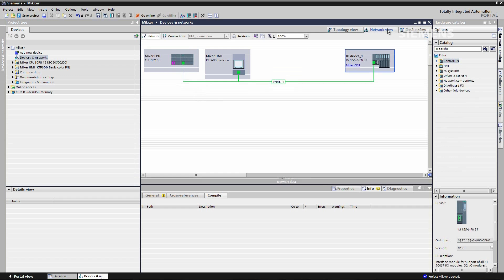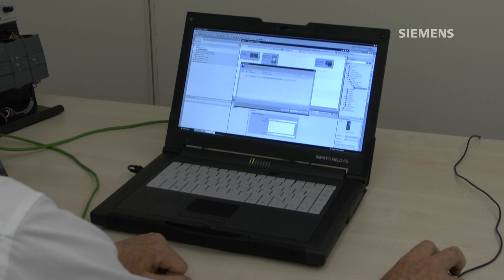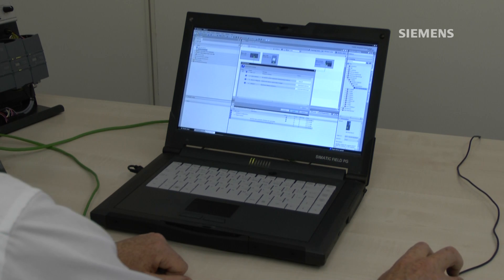Back to networks and download the hardware configuration into the CPU. I click on download to device. A few seconds later the download dialog box appears. And we load.